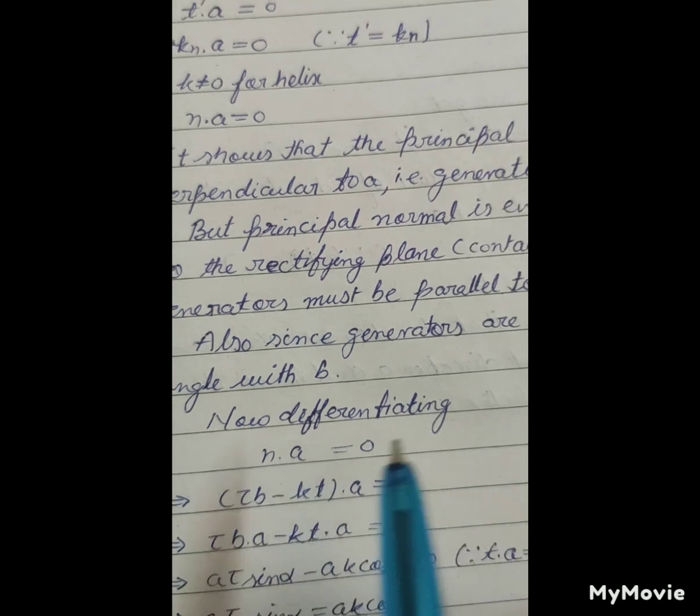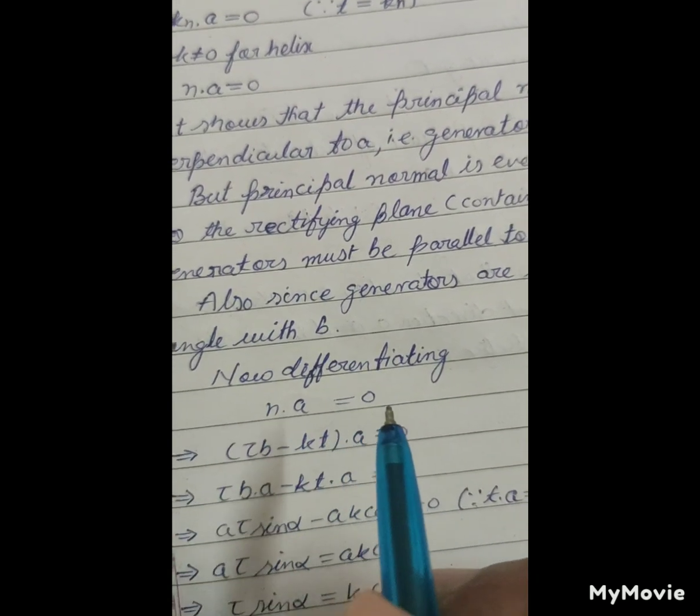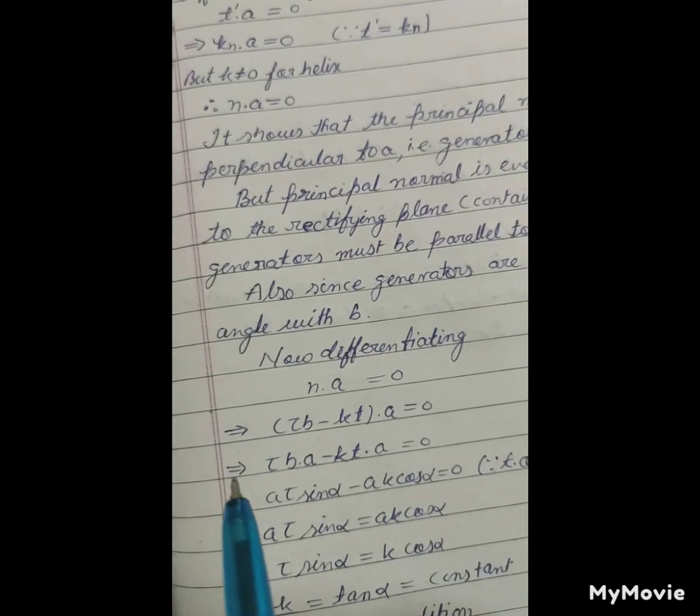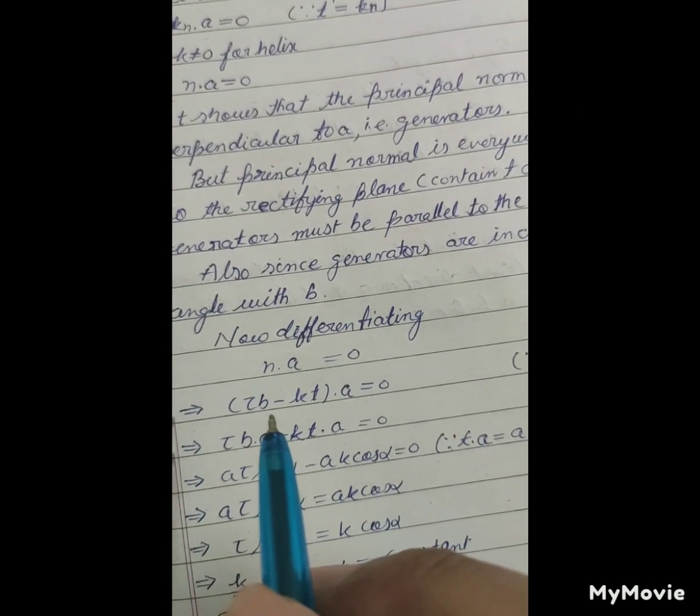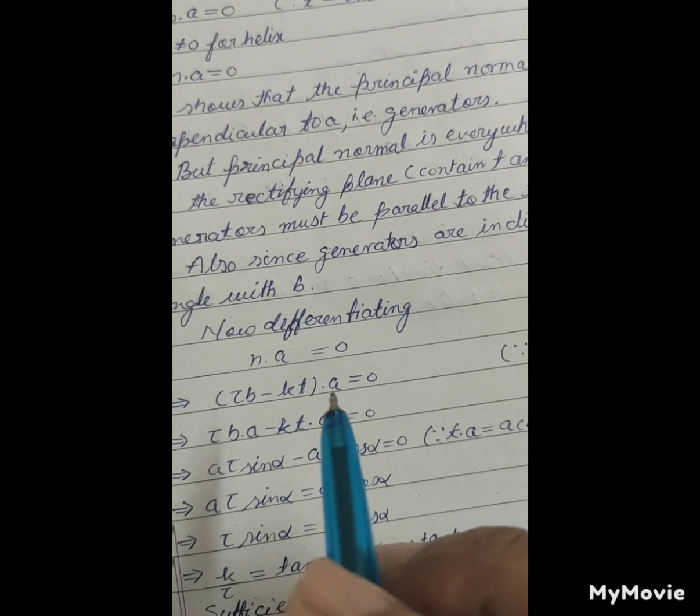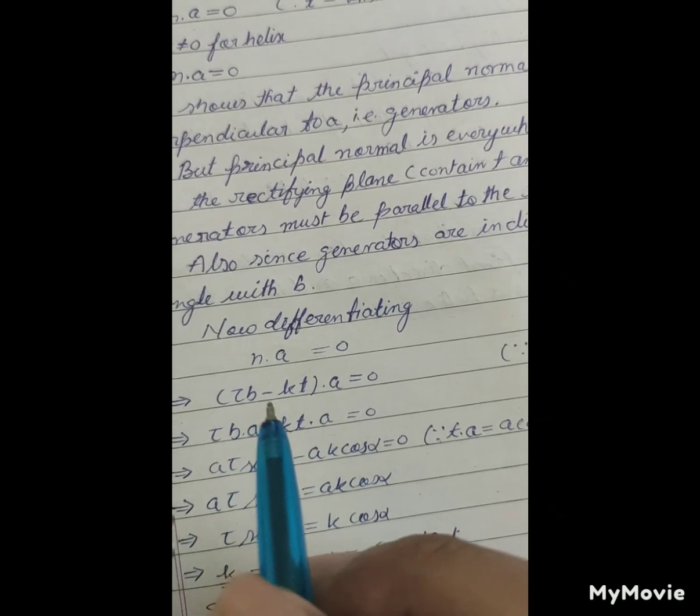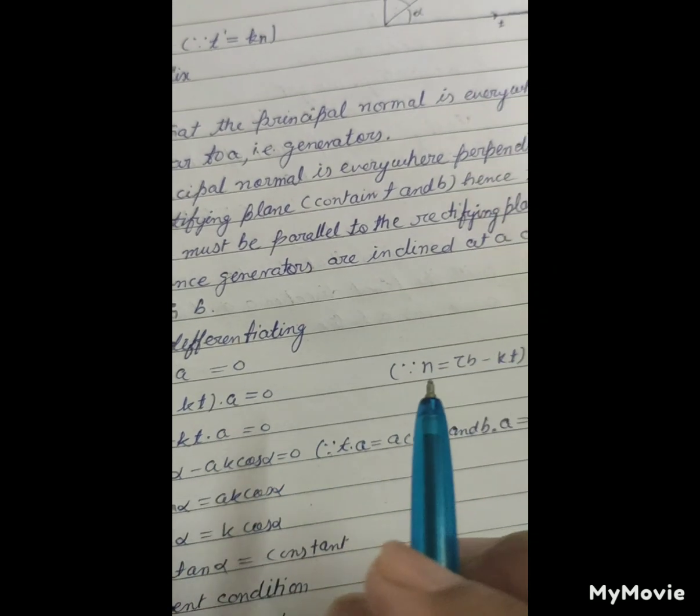Now differentiating n dot A equals 0, which implies (τb - kτ) dot A equals 0.